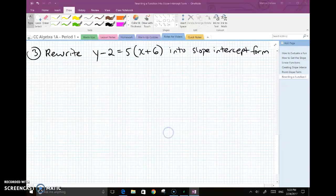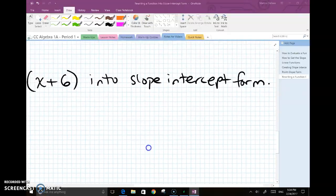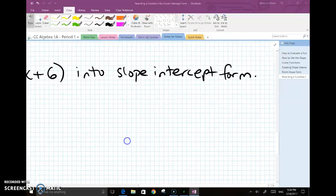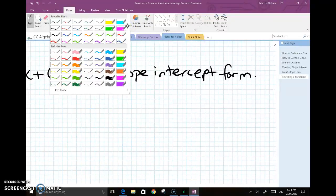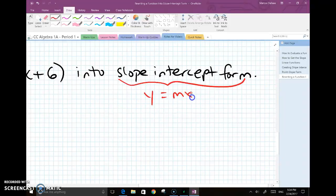So let's go ahead and jump right in. When you have to rewrite something that is in point-slope form, as it is in this case, into slope-intercept form, what you have to keep in mind is what slope-intercept form actually is. It never hurts to refresh your memory and review it again. So slope-intercept form is y equals mx plus b.